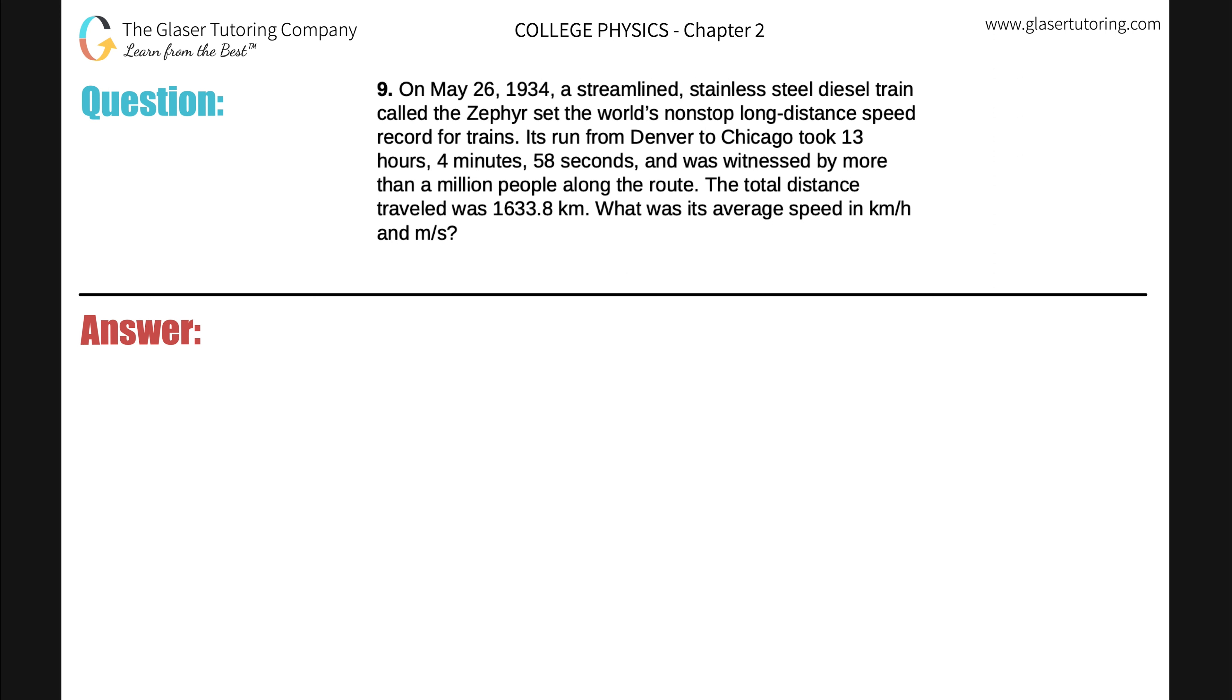Number 9. On May 26, 1934, a streamlined stainless steel diesel train called the Zephyr set the world's non-stop long-distance speed record for trains. Its run from Denver to Chicago took 13 hours, 4 minutes, and 58 seconds, and was witnessed by more than a million people along the route. The total distance traveled was 1633.8 kilometers. What is its average speed in kilometers per hour and meters per second?